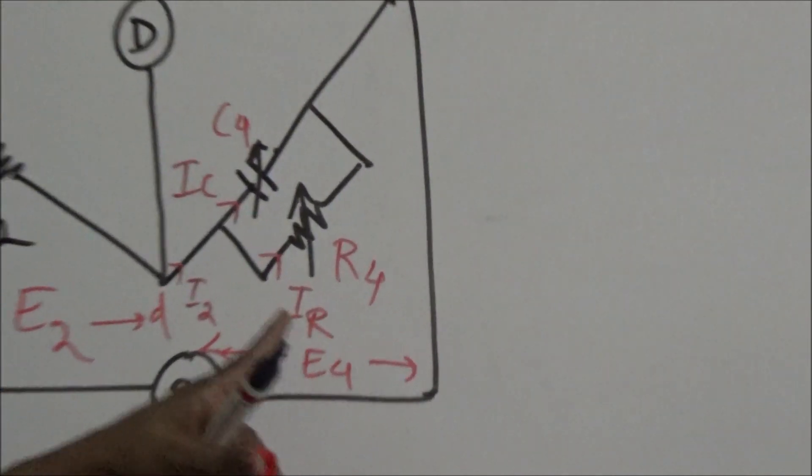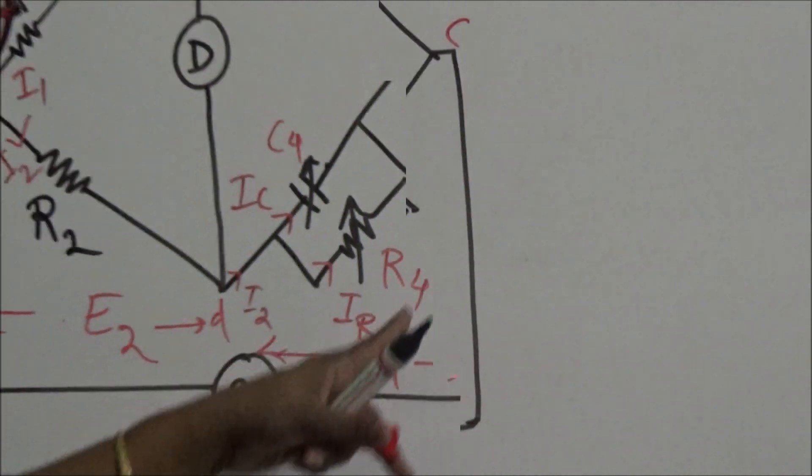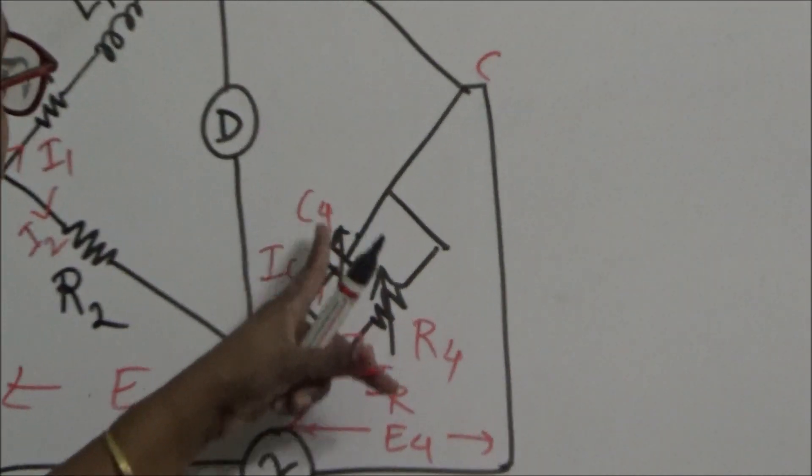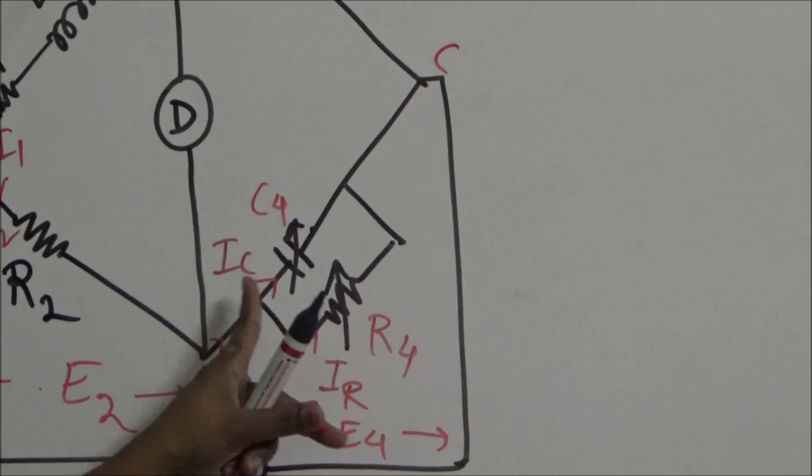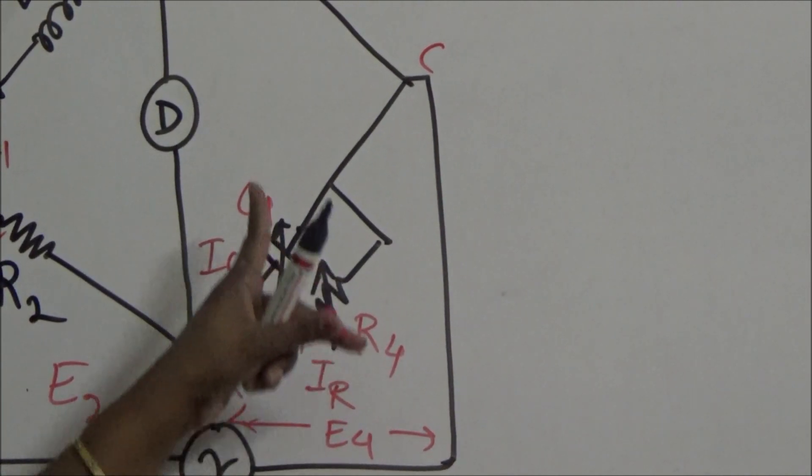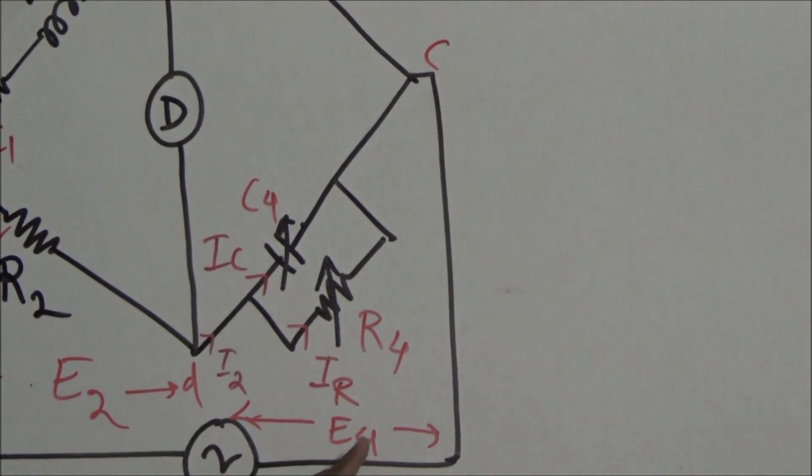The drop IR times R4 is E4, and IC divided by omega C4 is another expression of E4.